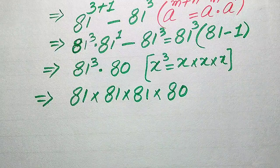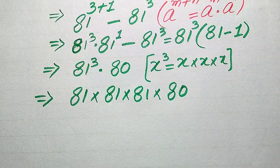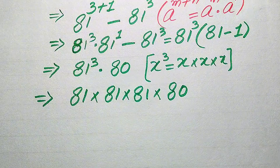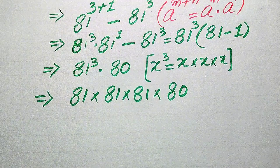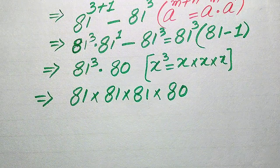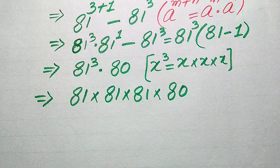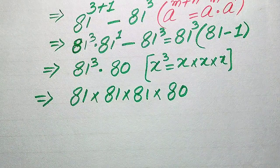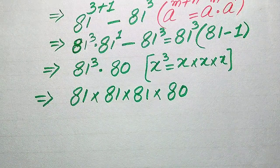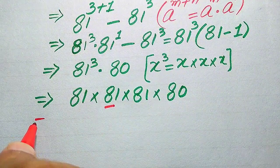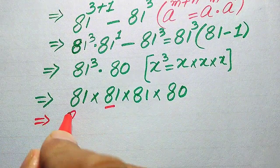These are four bigger numbers and the calculator is not allowed, so I will give you a smart technique to easily multiply any bigger numbers. In the next step, we convert 81 into the form of tens and ones.